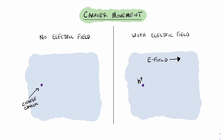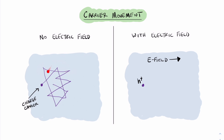The first step in understanding drift current is to look at carrier movement without an electric field. A charge carrier in a semiconductor could be an electron or it could be a hole. As that carrier gets thermal energy, it will move around randomly in this device, scattering with other carriers or atoms. That scattering causes the carrier to bounce around randomly, but there is no net movement — no net flow of carriers in one direction or the other.